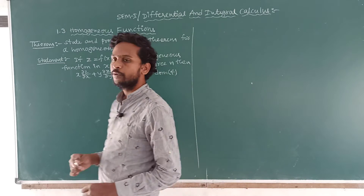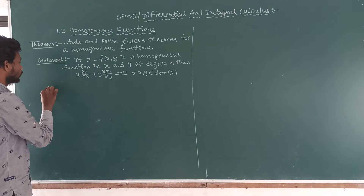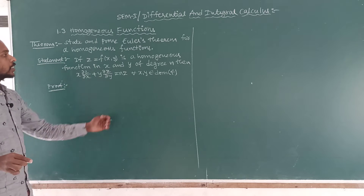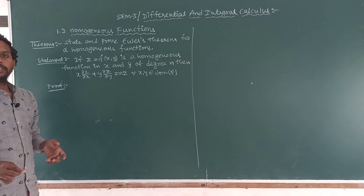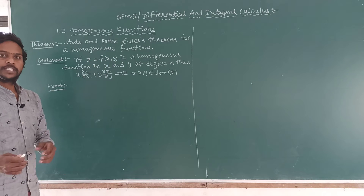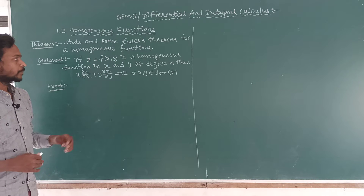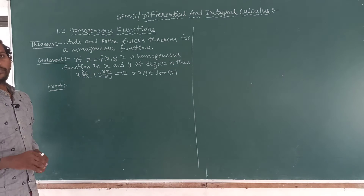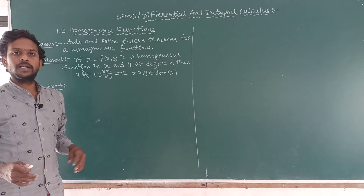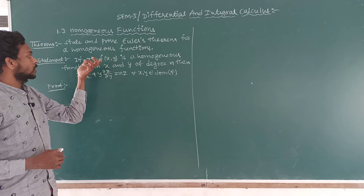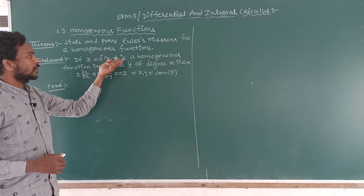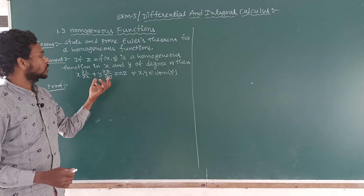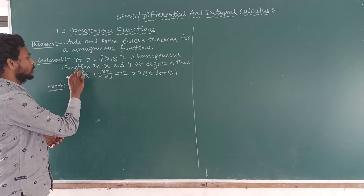Now see the proof. By the definition of a homogeneous function: f(x, y) is a homogeneous function if it can be expressed in the form x^n · f(y/x). In the statement, f(x, y) is given as a homogeneous function in x and y of degree n. We have to show the result — if we show this, our proof is completed. This is Euler's theorem.